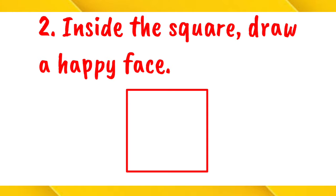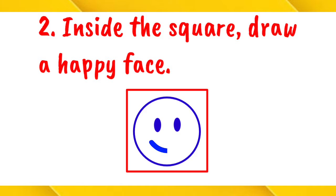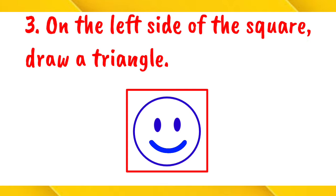Done! Number three, on the left side of the square, draw a triangle. The left side of the square is here. So, let's draw a triangle here.